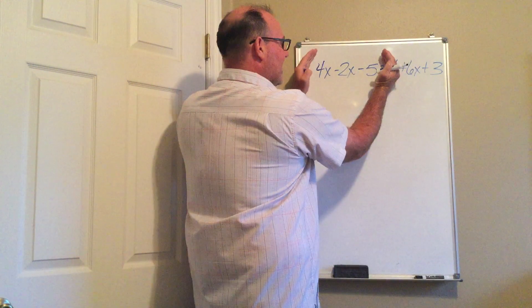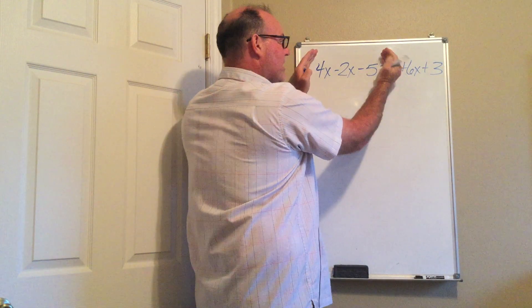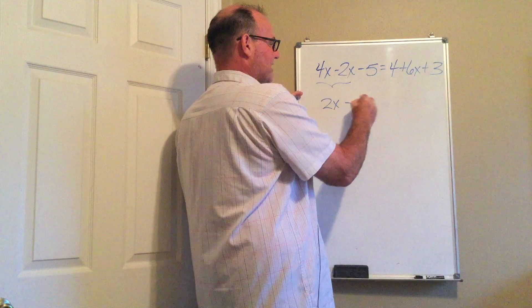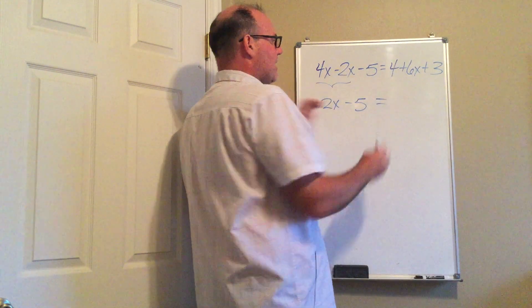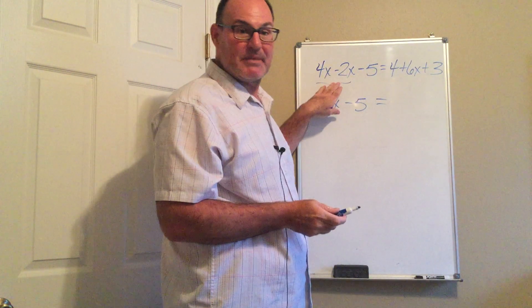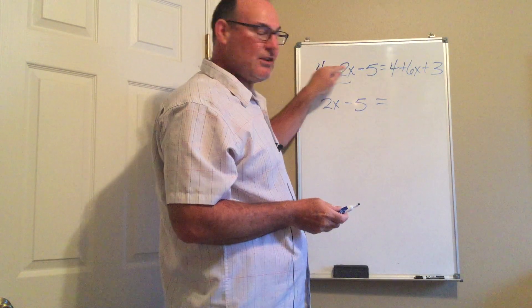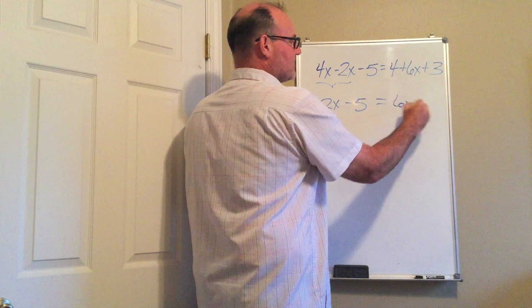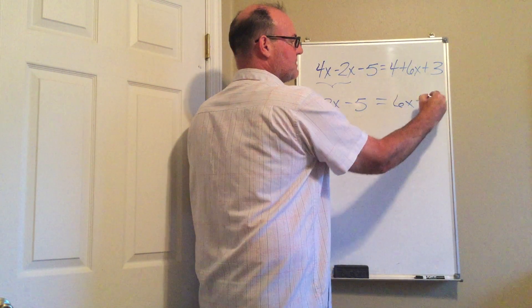So on the left side I have 4x minus 2x minus 5, so I am going to combine the x's and get 2x minus 5 equals. Notice I did not have to do the opposite thing because I am adding 2x's that are already on the same side. Over here I have the 6x and then 4 plus 3 is plus 7.